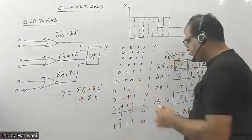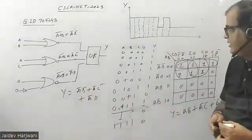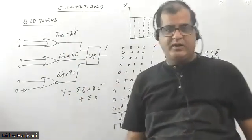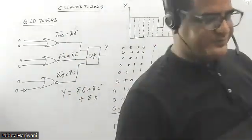Once you OR these, you get A-bar B-bar, A-bar C-bar, and A-bar D, which matches the K-map output. So the answer is that X is an OR gate. Thank you very much.